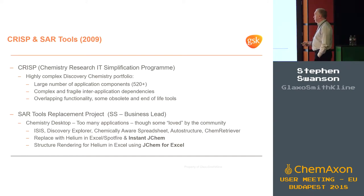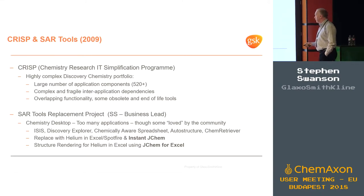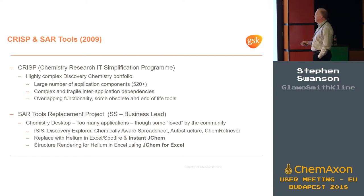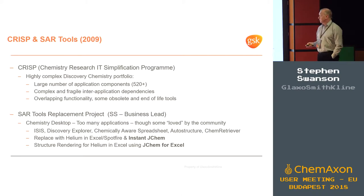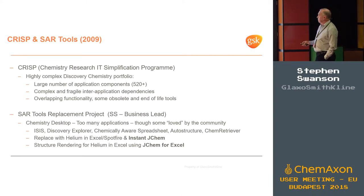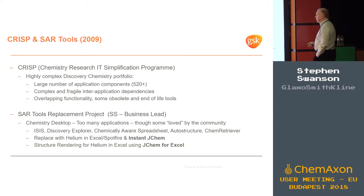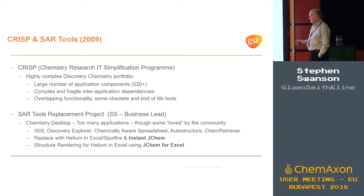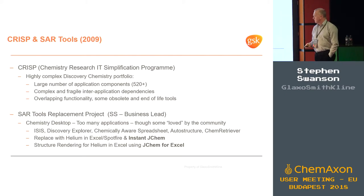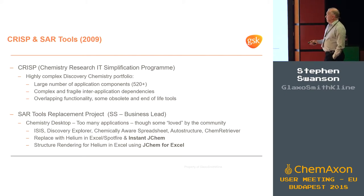So there's ISIS over here — Chem-aware Spreadsheet, Auto Structure, Chem Retriever, Discovery Pro. Can we get rid of all of these and replace them? What we did was set about building our own application called Helium, which could deal with accessing data — particularly biological data, which was done before with Discovery Explorer. But what we knew was the ISIS component wouldn't be fed by this, and that's when we came across Instant JChem.